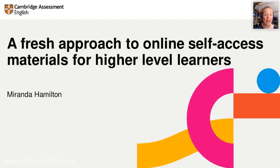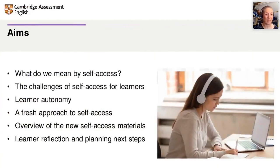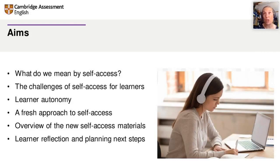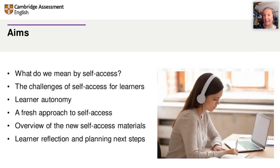Let's take a look at our aims for today's session. The first thing I want us to think about is what do we mean by self-access — it's got lots of different labels, and people are often confused by what each label means. The challenges of self-access for learners, and this makes us think about learner autonomy. What is our fresh approach? We'll give you an overview of the materials, and we're also encouraging our learners to reflect and plan their next steps.